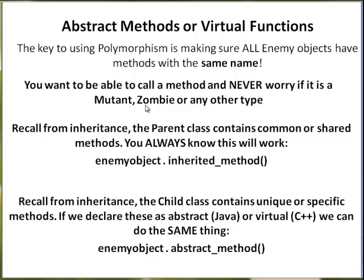The child class contains unique or specific methods. If we declare these to be abstract in Java, or virtual like C++ does, we can call enemyObject.AbstractMethod to run it for any enemy object. An abstract or virtual method is declared in the parent class and it forces the child class to implement the method. Think of it like a dad posting a list of chores — feed the dog, take out the trash, wash the car — forcing the child to do them. The compiler will guarantee that every child class has the same method with the same name.